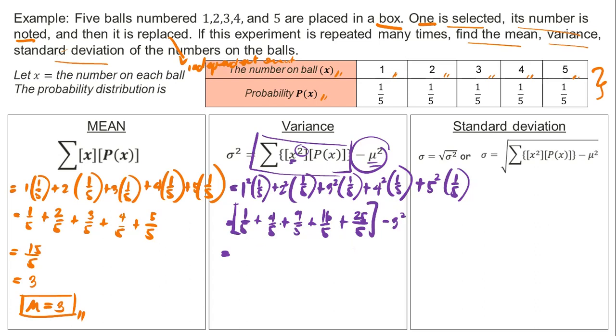Similar fractions, add the numerators. 1 plus 4 is 5, plus 9 is 14, plus 16, plus 25. The answer is 55 over 5 minus 9. 55 divided by 5 is 11 minus 9, which equals 2. Therefore, our variance is 2.